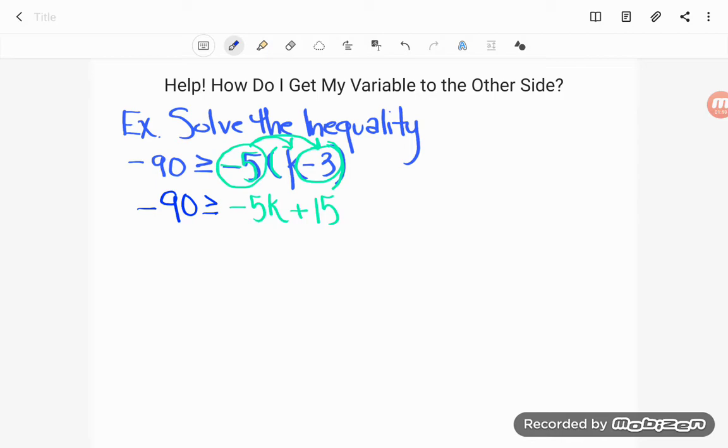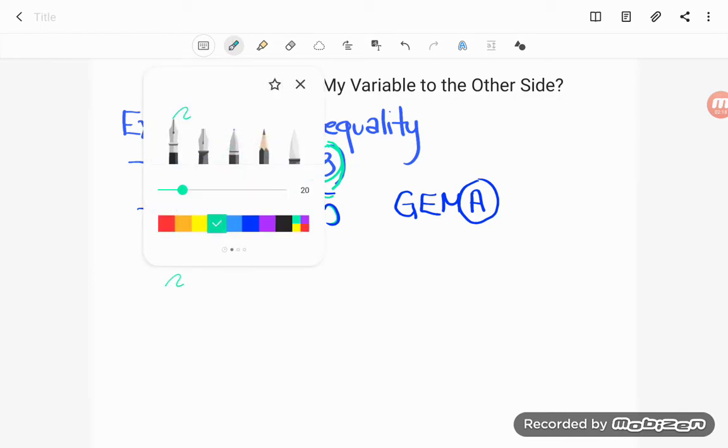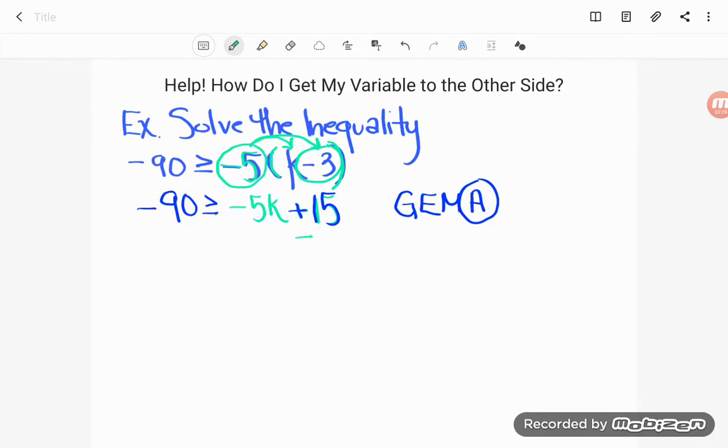It's time to start solving. It's time to start working to get the letter alone. Do remember when we're solving we work that lovely order of operations backwards. So we're going to move anything that's adding or subtracting with our variable first. And I do see something adding and subtracting with my variable. Plus 15 is adding, this 15 is adding with k. So that's what I will work to get rid of first. To get rid of something we do the opposite. So I'm going to subtract that 15 away.